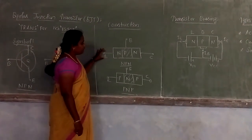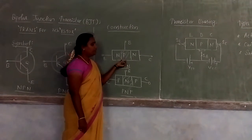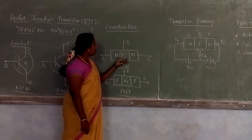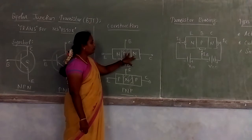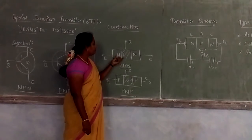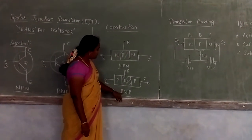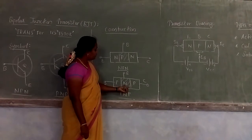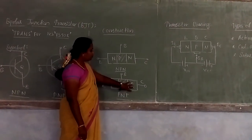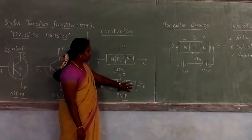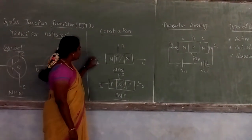First we see the NPN transistor. Here, a P-type material is sandwiched between two N-type materials. For the PNP transistor, an N-type material is inserted between two P-type materials.